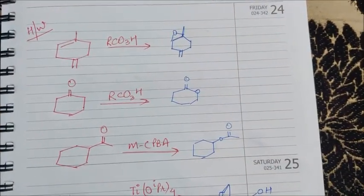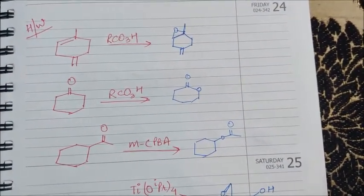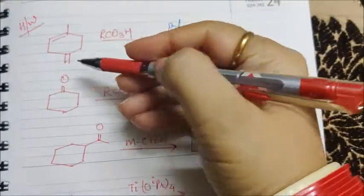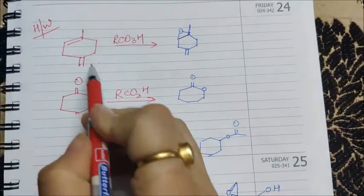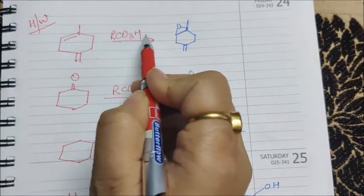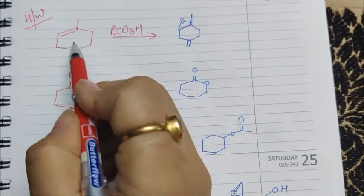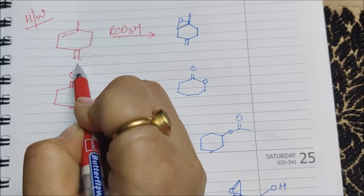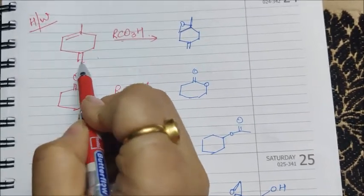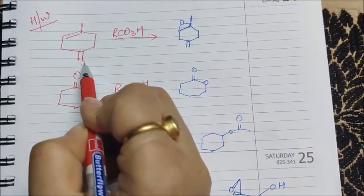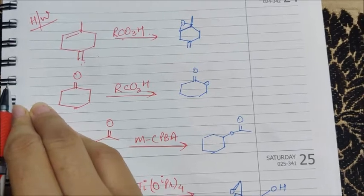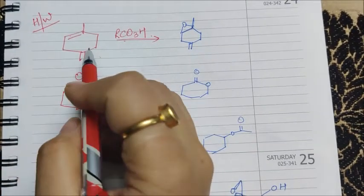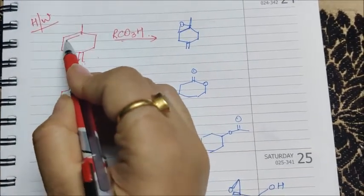I think I'm sure you must have solved the questions which I have given you in the last video. So let's talk about this question first. In this question we are given a peracid and two alkenes are there. As we know the rule, out of the two alkenes, the alkene which is more electron-rich will form the epoxide.